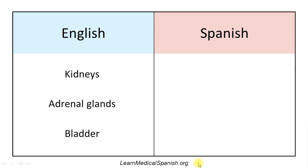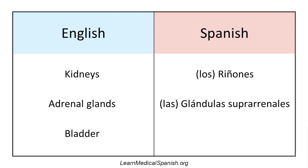Next is kidneys. Los riñones. Los riñones. Adrenal glands — so earlier we learned the word for gland when we learned thyroid gland, so try using that again. With your knowledge of medical terminology, you can easily break that down — suprarenal, like above the kidney or whatever.